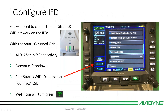To connect the Stratus to the IFD: make sure the Stratus 3 is turned on with the IFD also on and in flight mode. Hit the AUX button at the bottom of the bezel, go to the Setup tab, find the Connectivity dropdown, expand that menu, and find Networks. Inside that dropdown you should see the Stratus Wi-Fi ID in the list. If you don't know your Stratus Wi-Fi ID, look on the back of the unit — there's a label. In my case it's Stratus 3020502, but your numbers will look different.